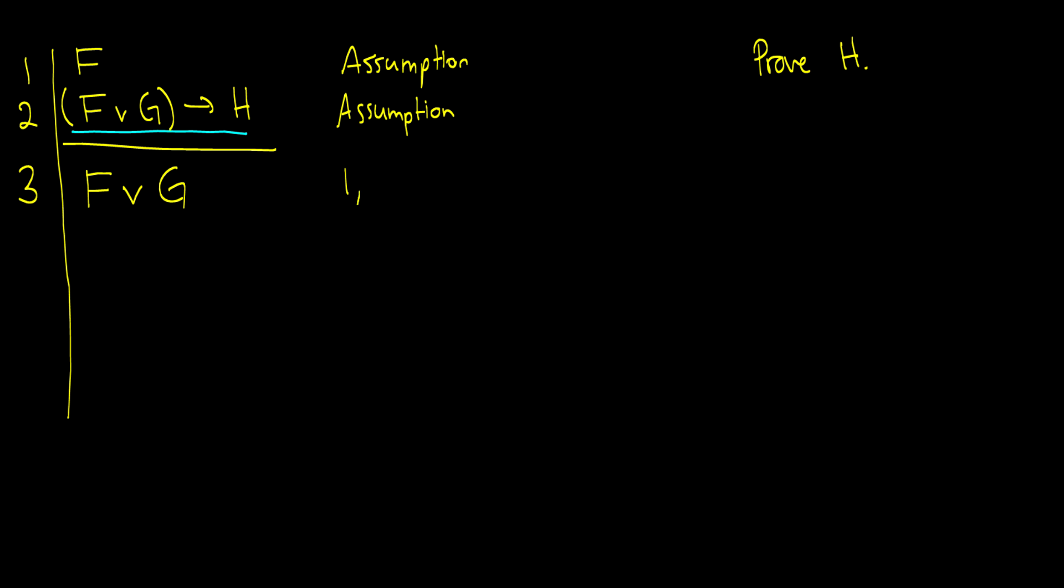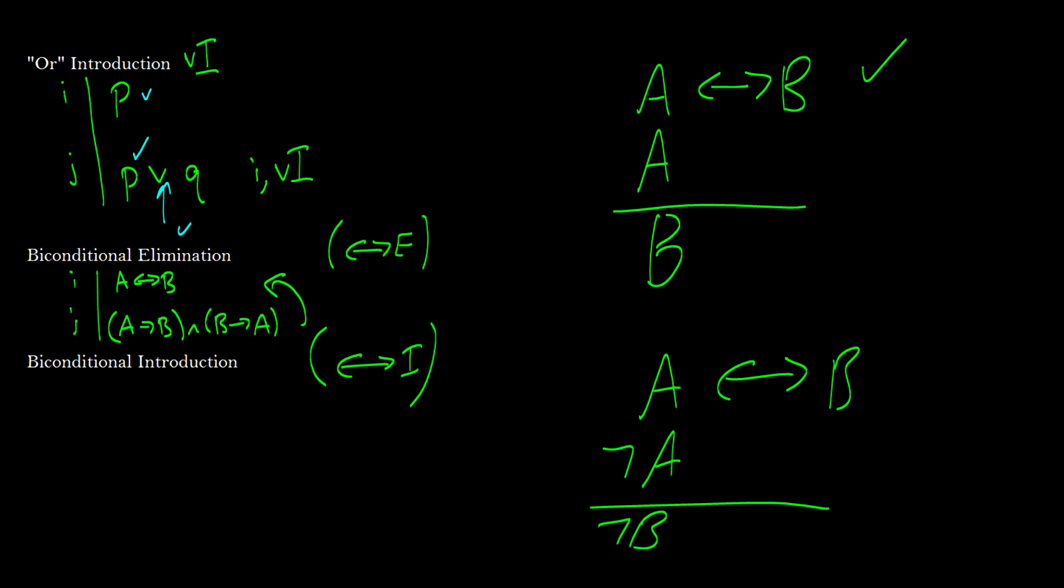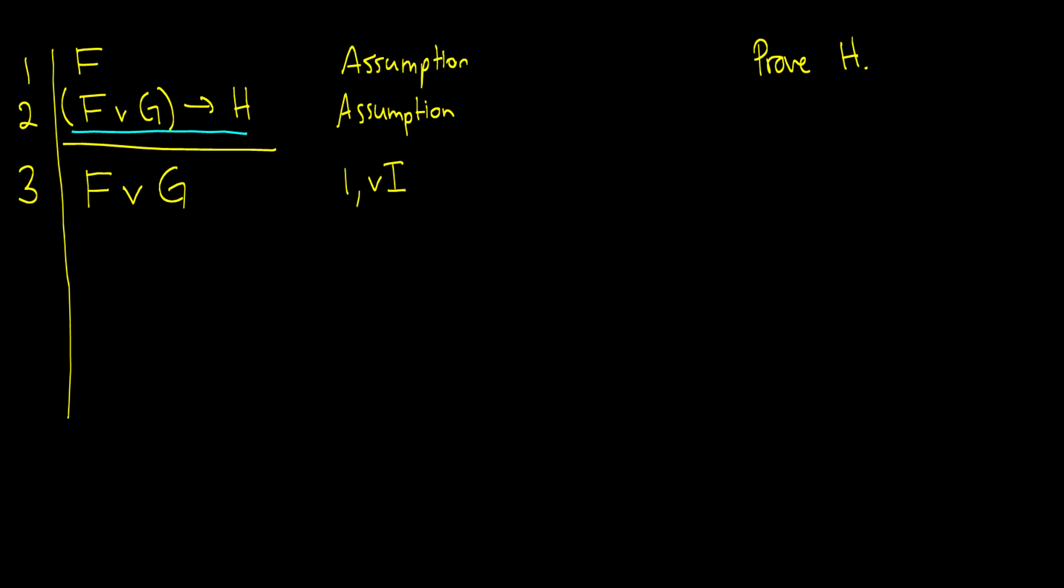So we take F from the first line, and we just add OR. So on one, we use OR introduction, which is going to be this rule right here. If we have P on one line, then on another line, we can put P or Q. And those can be any letters you want. So that is the first step.